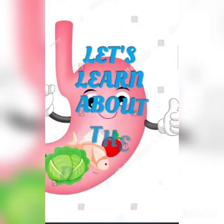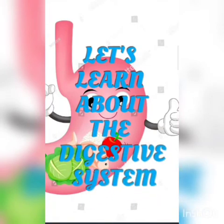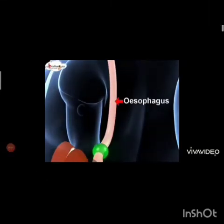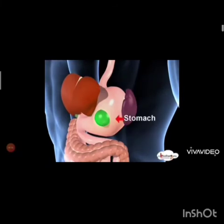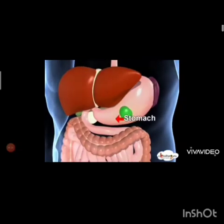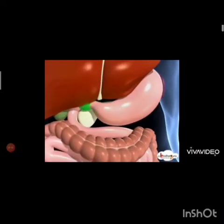Now let's learn about the digestive system. In the mouth, food is chewed by the teeth and mixed with saliva. Then the food is pushed forward through the food pipe into the stomach. The stomach is a bag made of muscles, where food stays for four to six hours, and gastric juice is released.